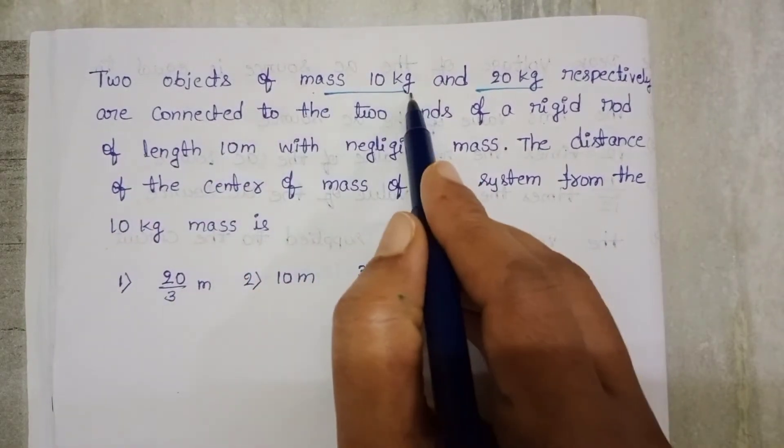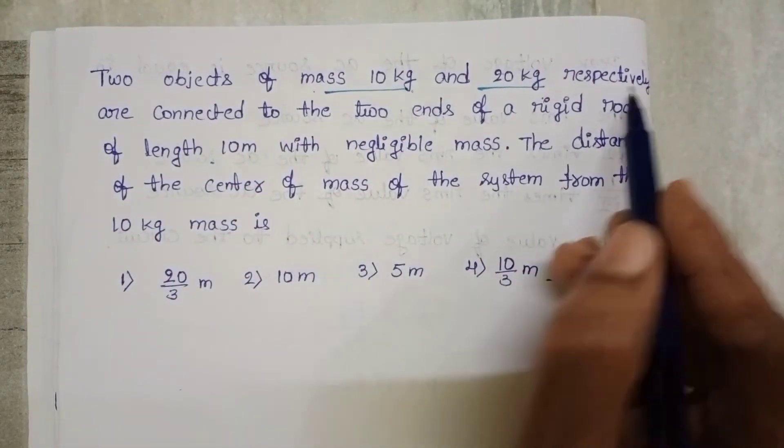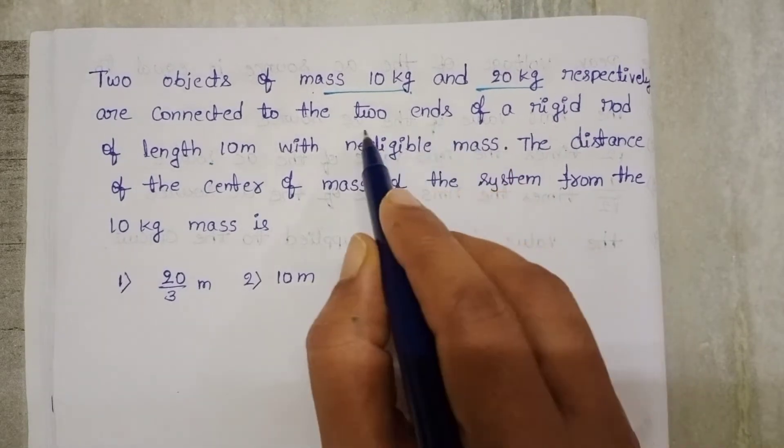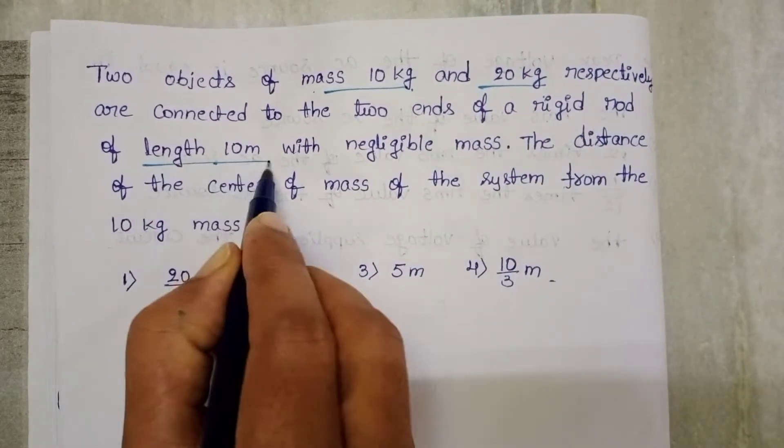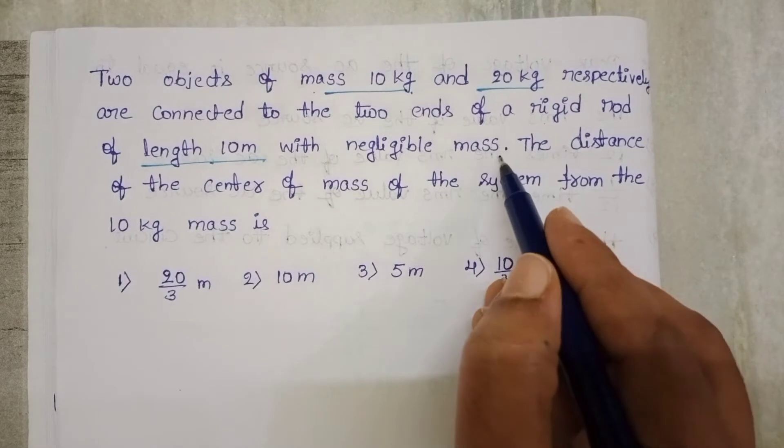Two objects of mass 10 kg and 20 kg respectively are connected to the two ends of a rigid rod of length 10 meters with negligible mass.